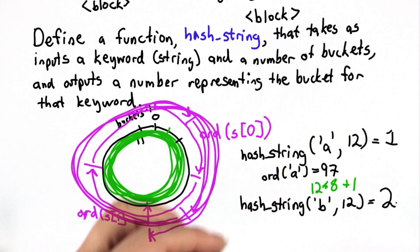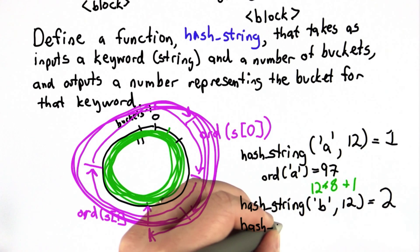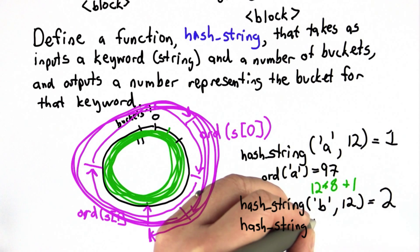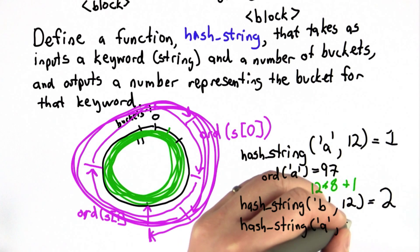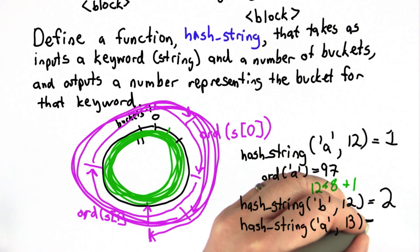If we change the number of buckets, the results will be different. So let's say instead of having 12 buckets we have 13, and we tried hash_string on this single letter string A with 13 buckets.